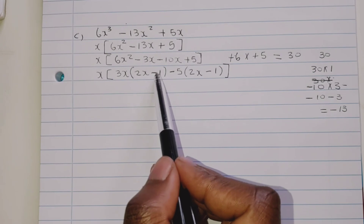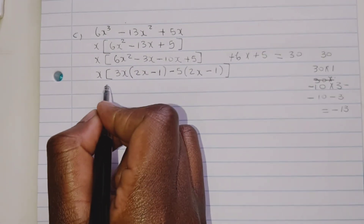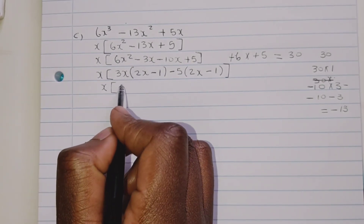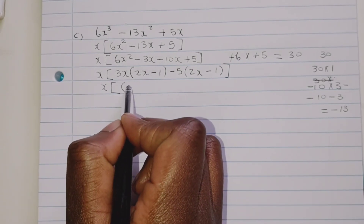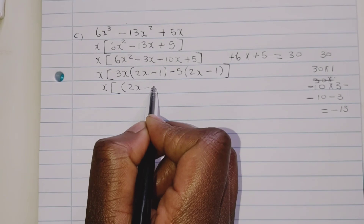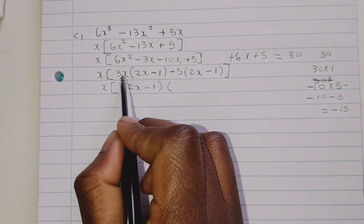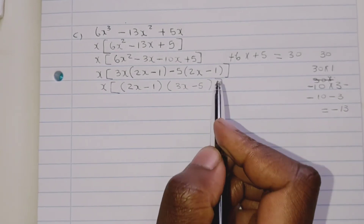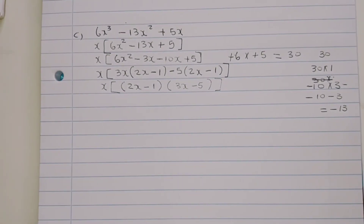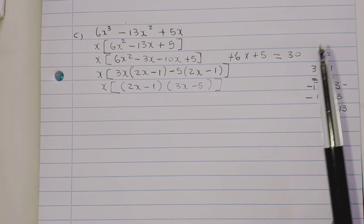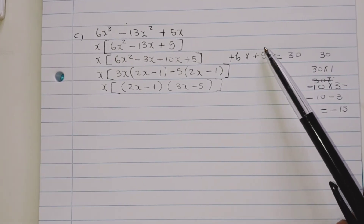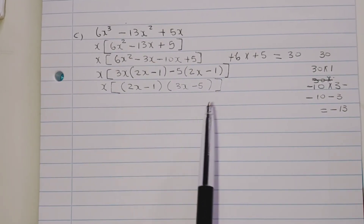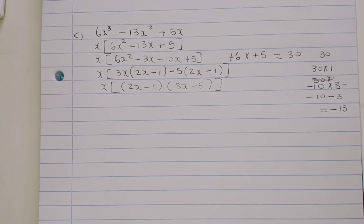Now that we have matching pairs, we write the final answer: x open bracket (2x minus 1)(3x minus 5) close bracket. So the fully factorized answer is x(2x minus 1)(3x minus 5). We used trinomial factorizing together with finding the common factor x to get our final result. And with that, we move to our next question.